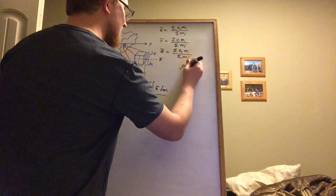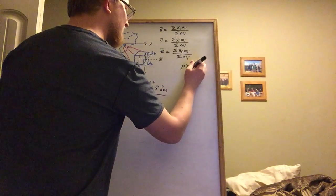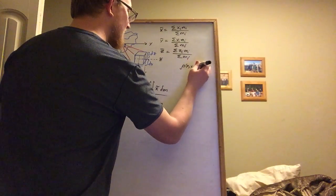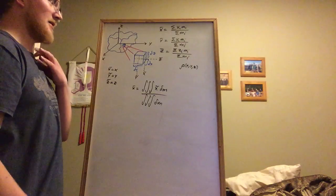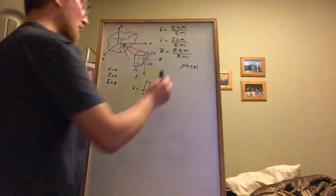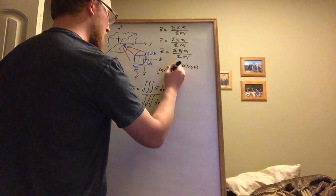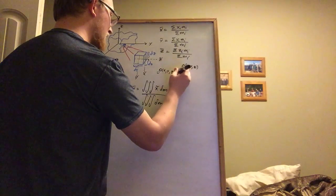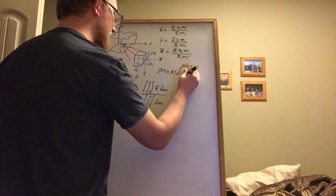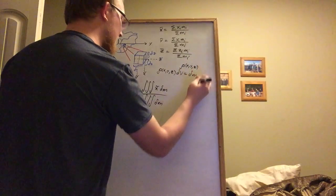So let's say that we have some density that's a function of x, y, and z, and we can then multiply that density by dV. So ρ of x, y, and z times the volume is going to equal our small chunk of mass.